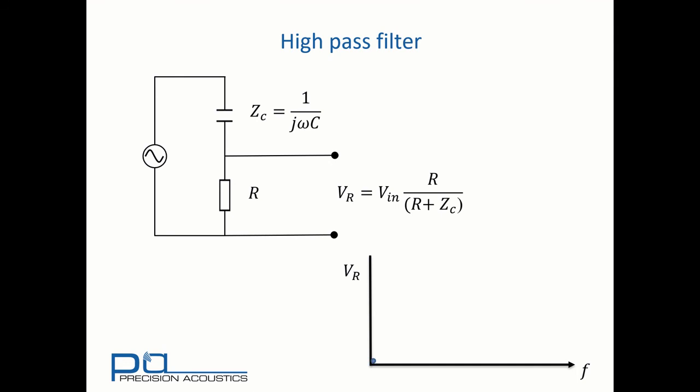If we swap the order of the capacitor and the resistor we can apply exactly the same logic. And we now find that the voltage across the resistor relates to R over R plus ZC. In this case we note that at low frequency ZC is a very large value, in which case we get quite a small output voltage across the resistor. But as frequency goes up ZC becomes much smaller, until eventually you end up with a very high output value of VR equivalent to VIN. And this is our typical response curve here.